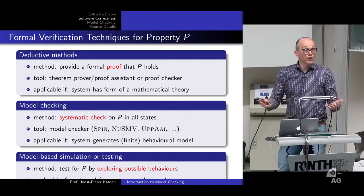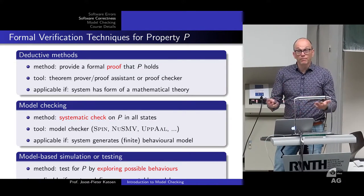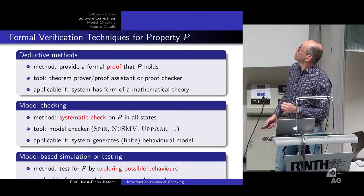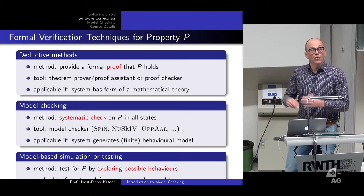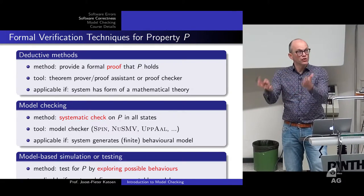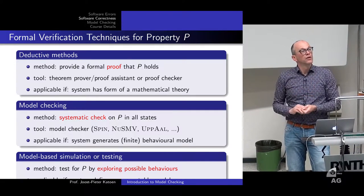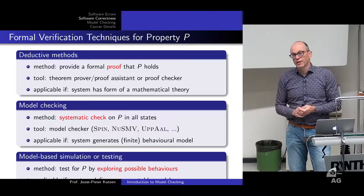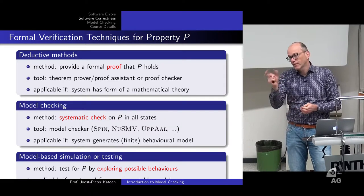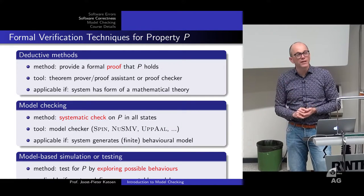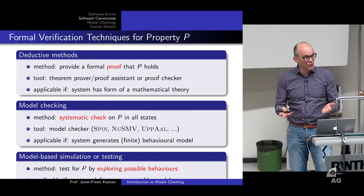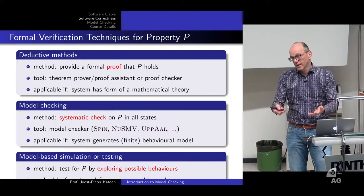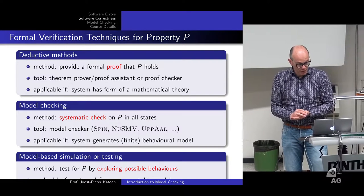You can support this using theorem provers or proof assistants. You basically guess a property — say, X is always at least Y — and the theorem prover can assist you in checking whether this is the case.